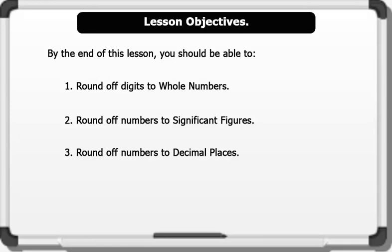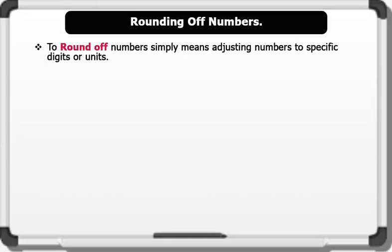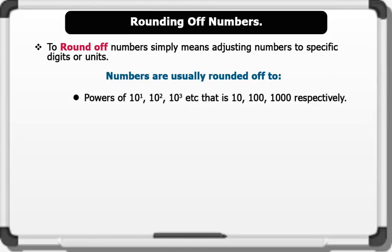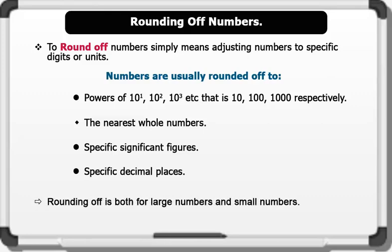Rounding off numbers simply means adjusting numbers to specific digits or units. Numbers are usually rounded off to: one, the powers of ten or its multiples — that is tens, hundreds, or thousands etc.; two, the nearest whole numbers; three, specific significant figures; and four, specific decimal places. Note that rounding off applies to both large numbers and small numbers.